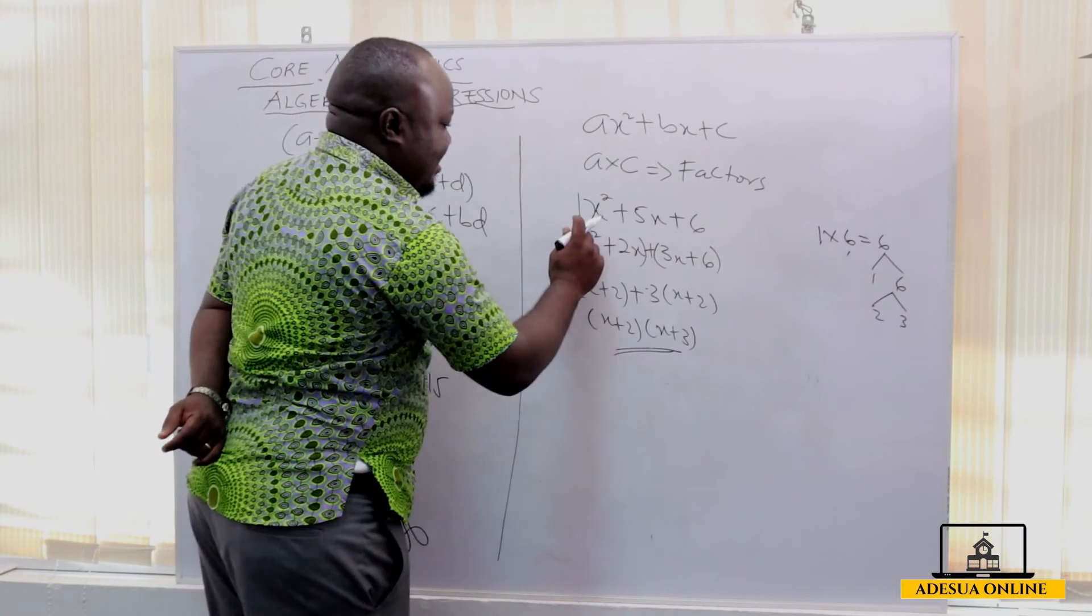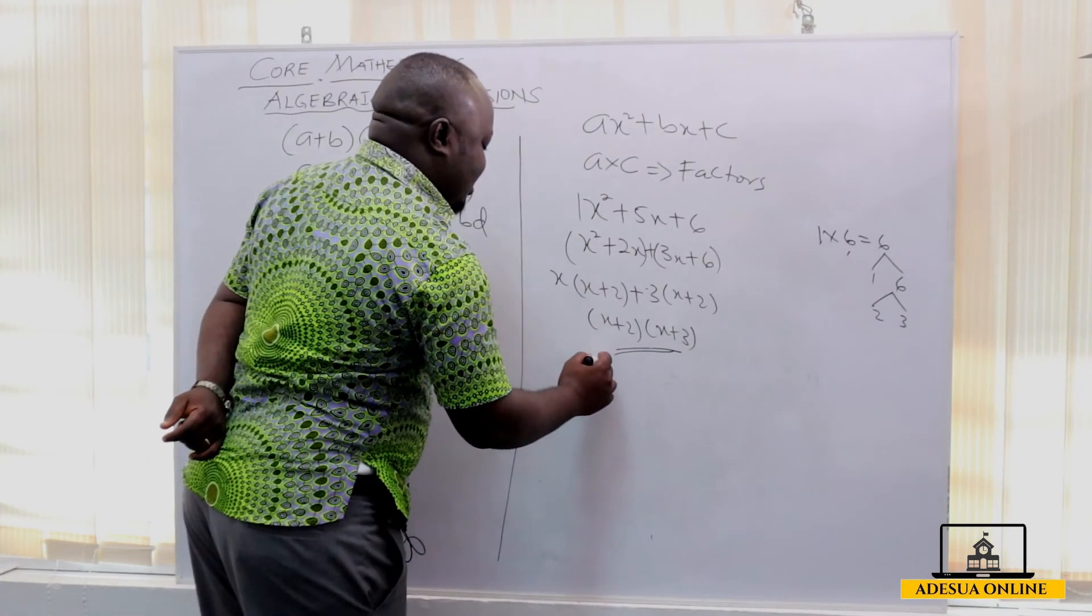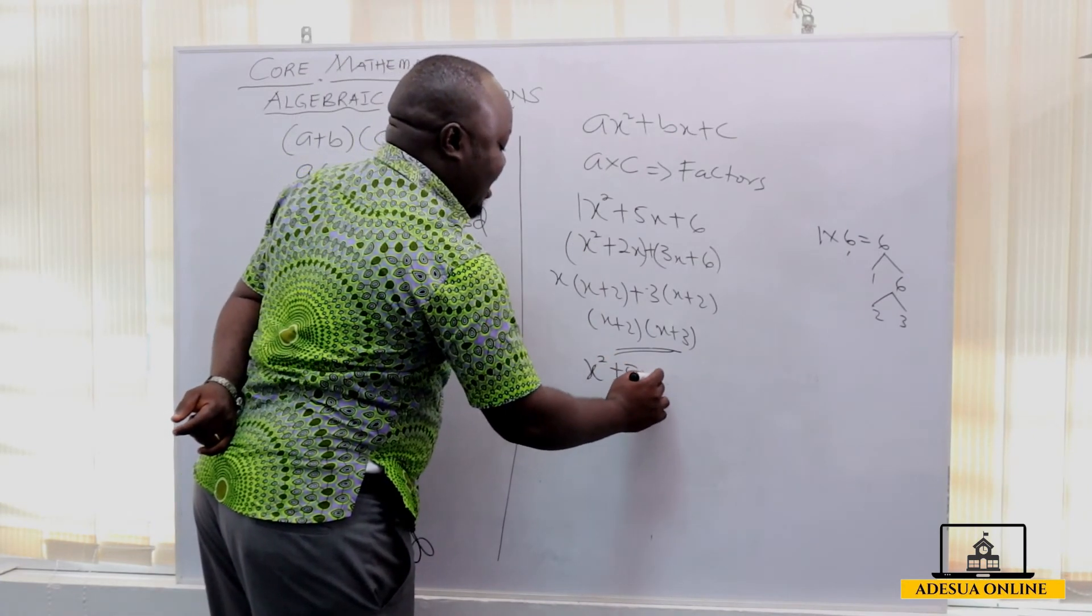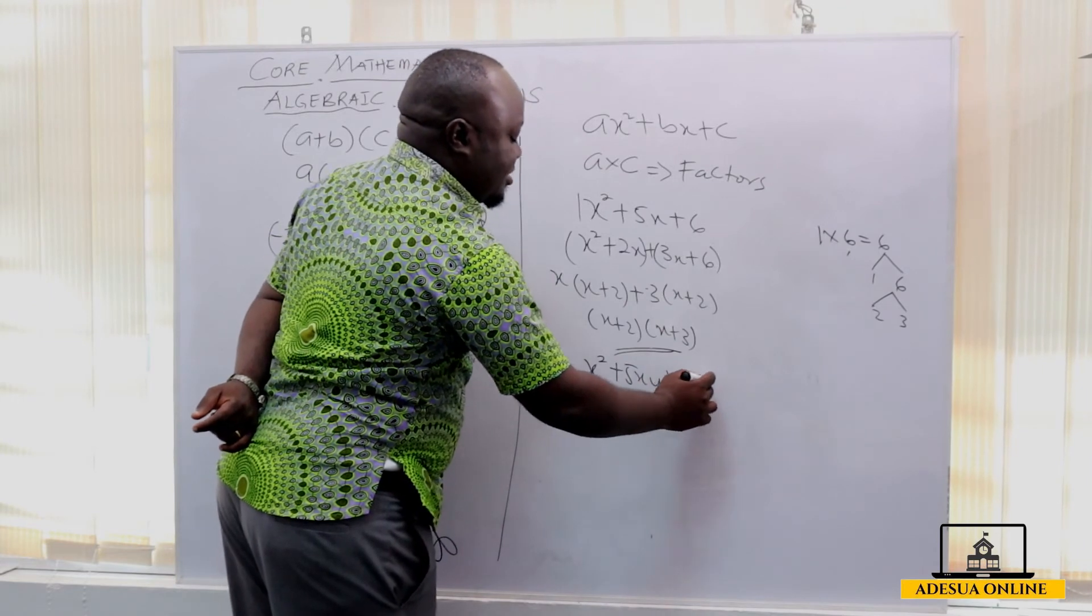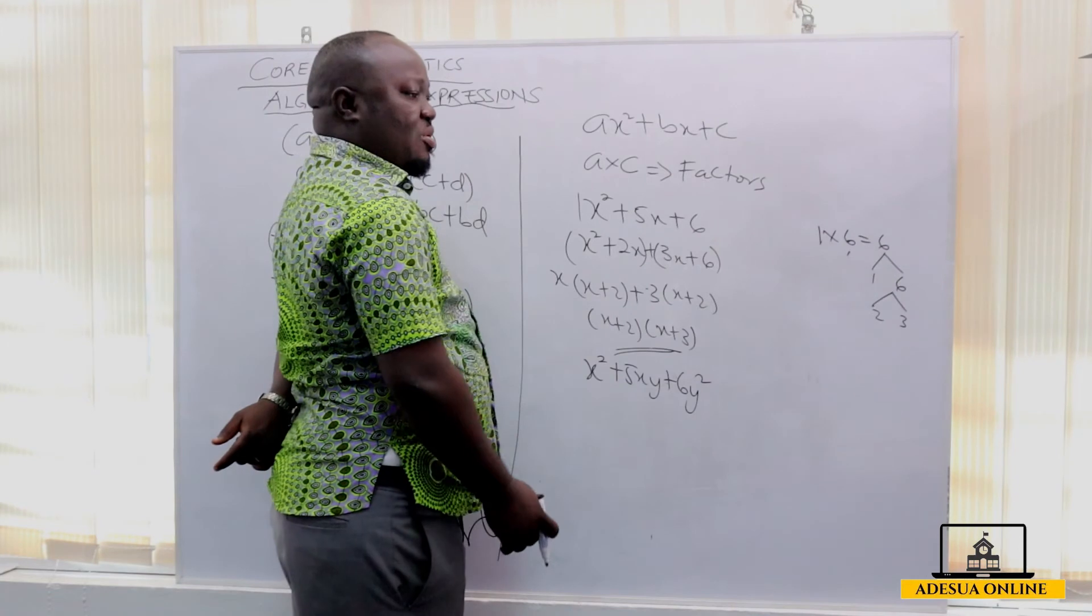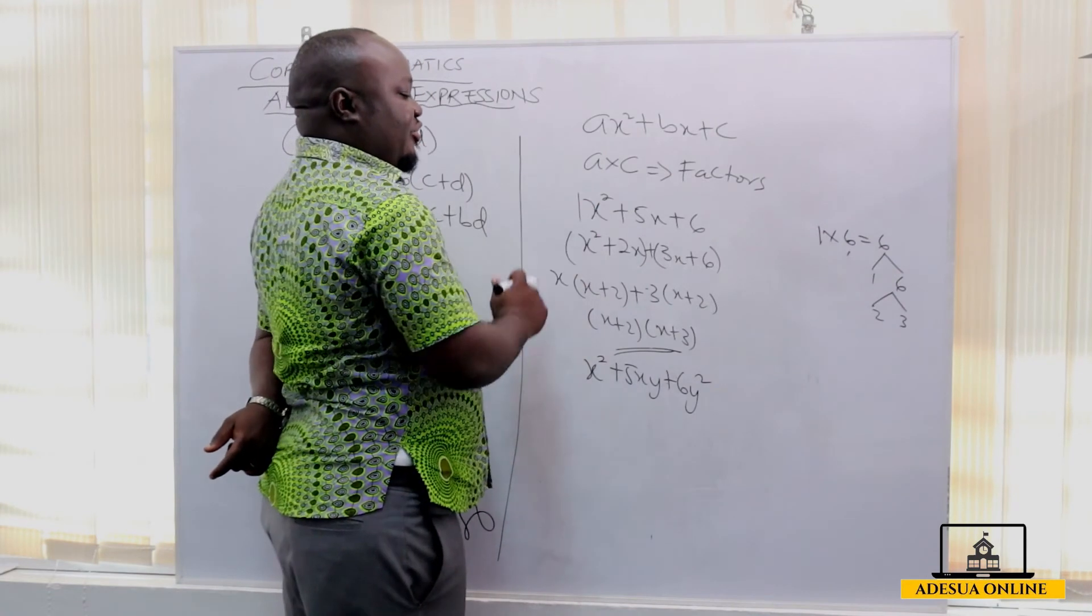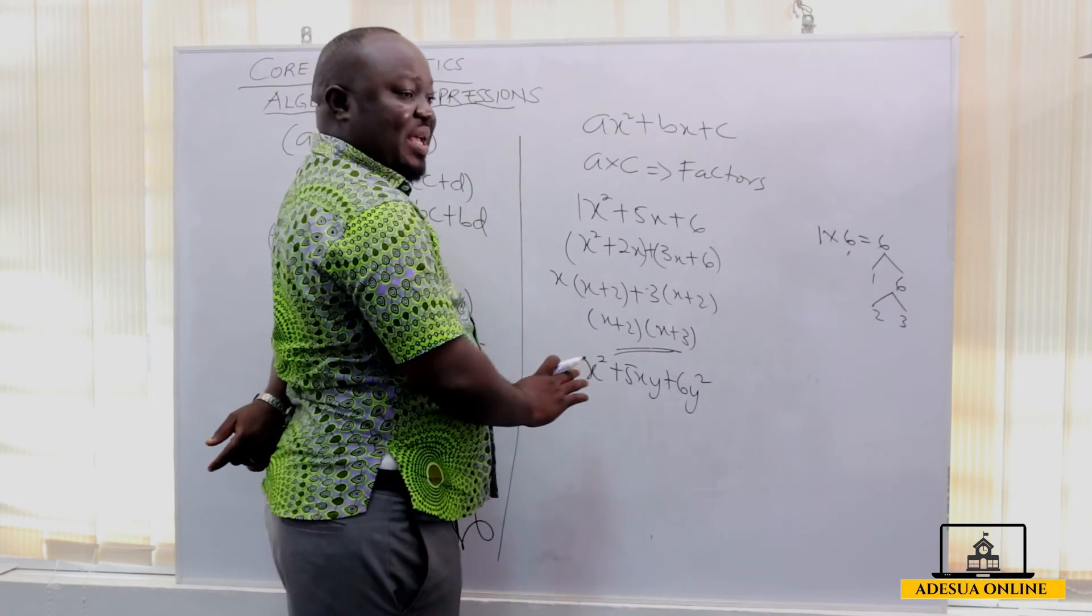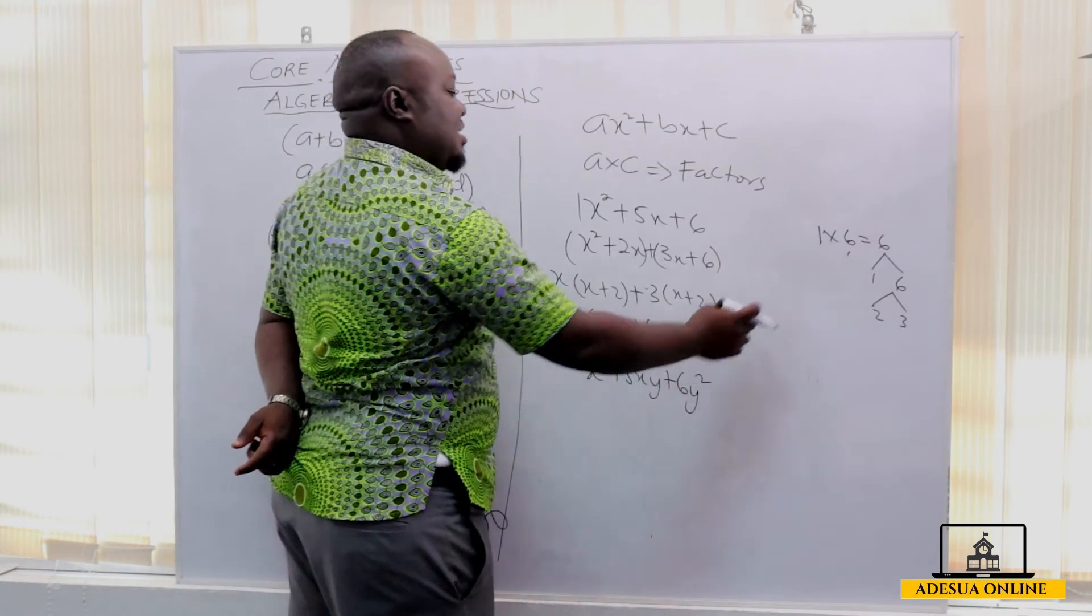The same way, this same question can be put in this way: x squared plus 5xy plus 6y squared. Now, the introduction of the second variable y doesn't change anything from this same method. It is the same method, 1 times 6 is 6.